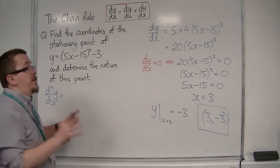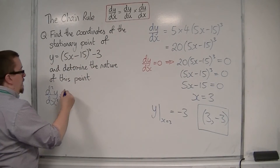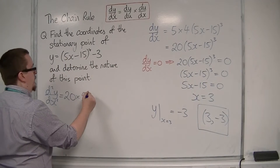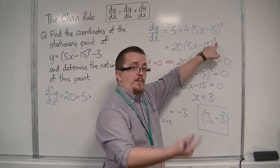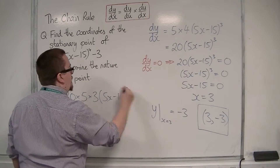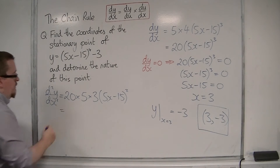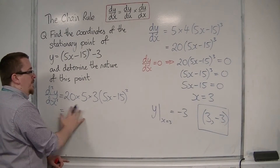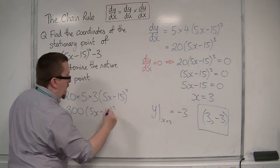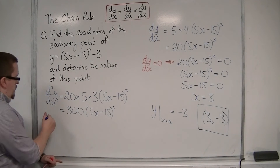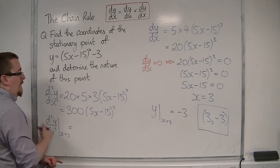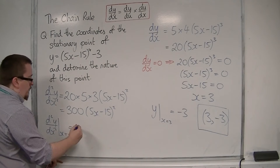To find the second derivative, I need to use the chain rule again on 20(5x - 15)³. The derivative of the inside (5) comes outside, the index 3 comes down to the front, and we take 1 off the power. So d²y/dx² = 20 × 5 × 3 × (5x - 15)² = 300(5x - 15)². Evaluating at x = 3: (5×3 - 15) = 0, so the second derivative is 0.